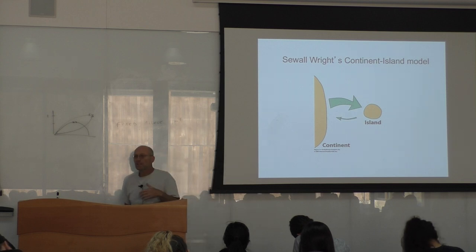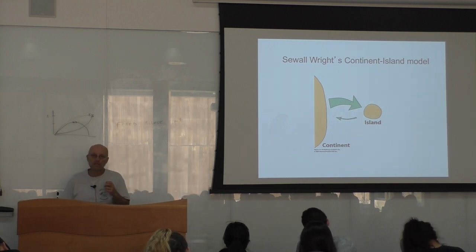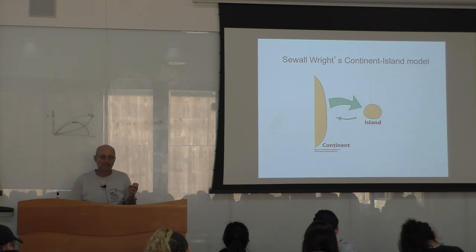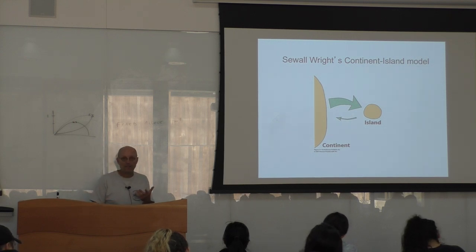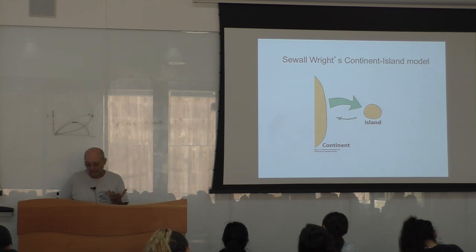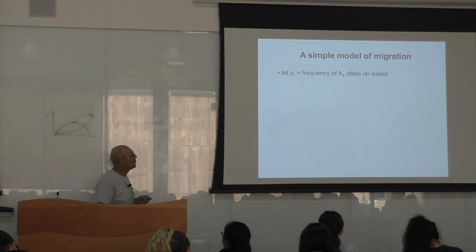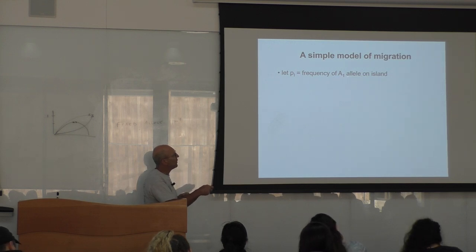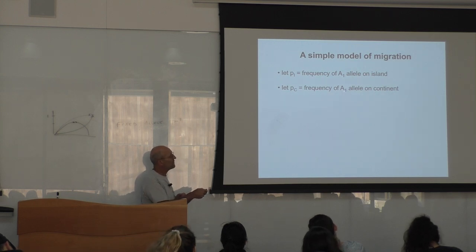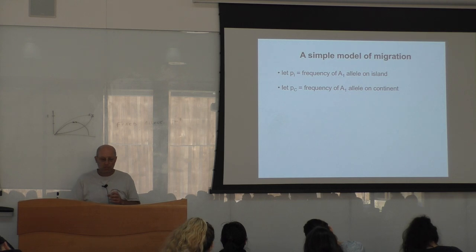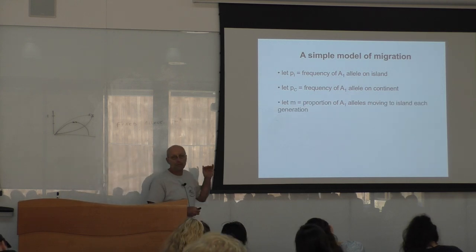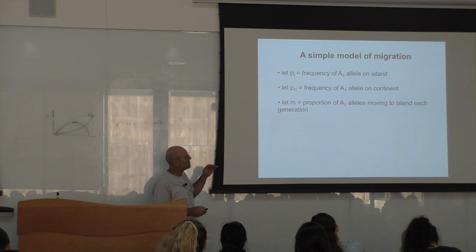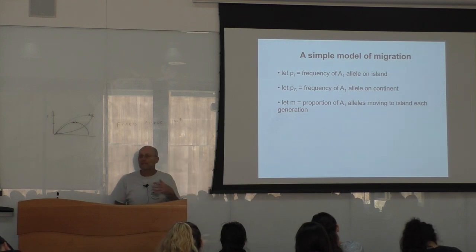The other migration direction is very small, so we are not going to consider individuals that come back from the island to the continent. In fact, there are no examples of Galapagos individuals that have gone from the islands to the continent. So the assumption is failed. We are going to consider that PI is the frequency of allele 1 on the island, and PC is the frequency of allele 1 on the continent. And N is the migration rate — the proportion of A1 alleles moving to the islands in each generation.